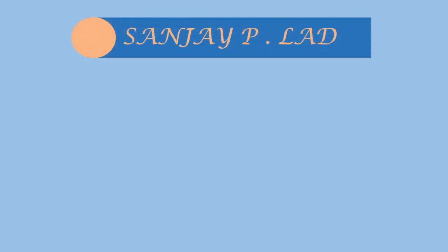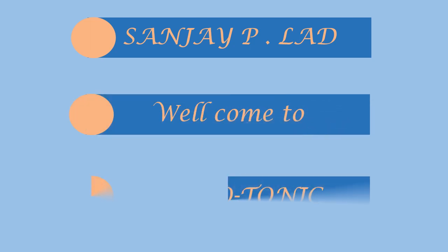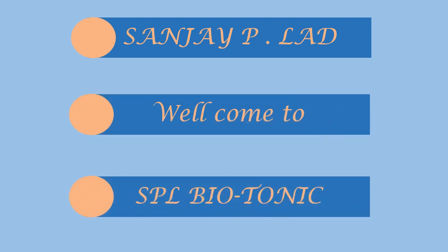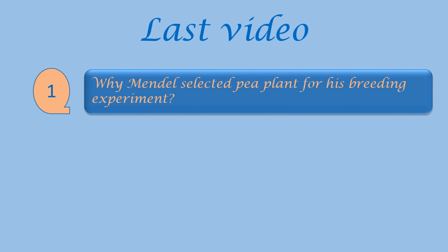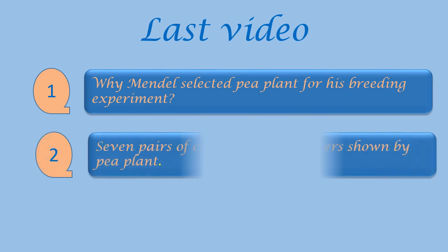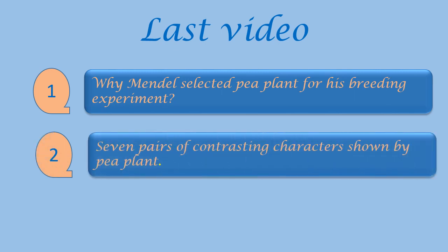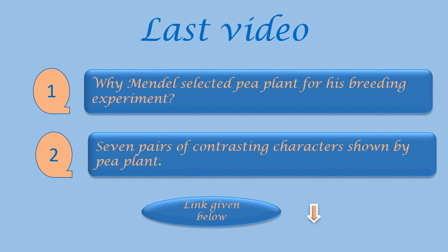Hi, I am Sanjay Lad. Welcome to Special Biotonic. In the last video, we discussed about two aspects: one is why Mendel selected pea plant for his breeding experiment, and second is what are the seven pairs of contrasting characters shown by the pea plant. The link for this video is given below.